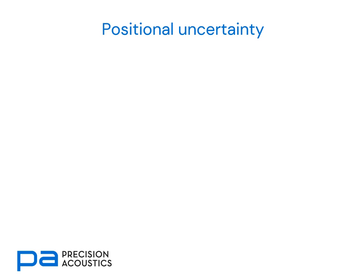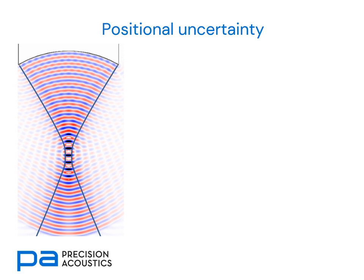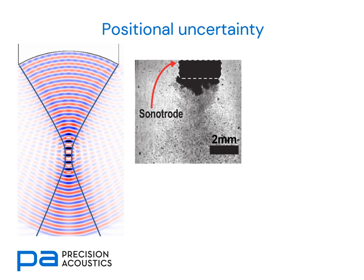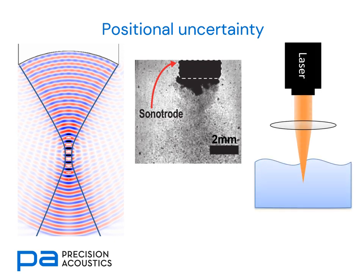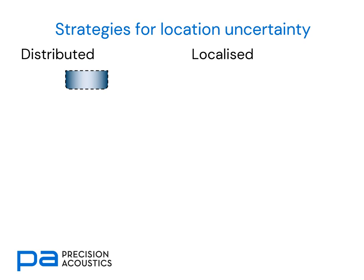We have another issue, and that is positional uncertainty. Regardless of whether the source of cavitation is a focused transducer, some kind of sonotrode, or laser induced cavitation — where a laser is focused into the water and produces a cavitating bubble — the cavitation is a stochastic process. We don't know exactly where that bubble will be generated. We have greatest likelihood of knowing where we're going to be generating a bubble with laser induced cavitation — it's likely to be at the focus of the laser. With a focused transducer, we could be seeing cavitation events anywhere within the focal region and potentially just outside, and with a sonotrode we could be looking at widespread distributed cavitation events.